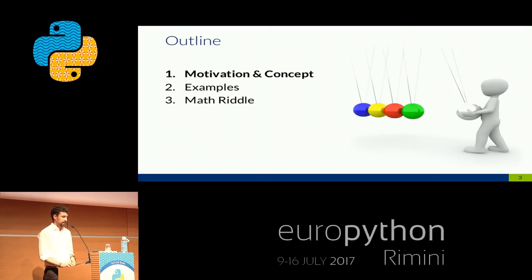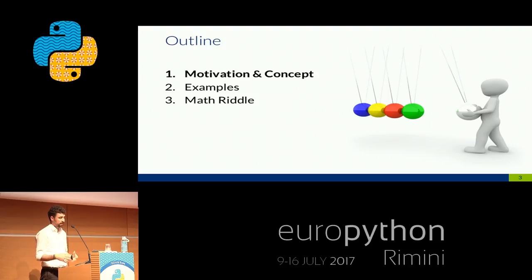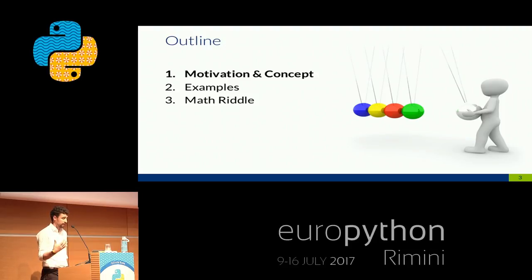The outline is: first a small motivation about declarative thinking and the concept behind it. Then I'll show some examples in Python of how you can actually apply this way of thinking. And in the end I'll conclude with a little math riddle — so everyone likes riddles, hopefully.